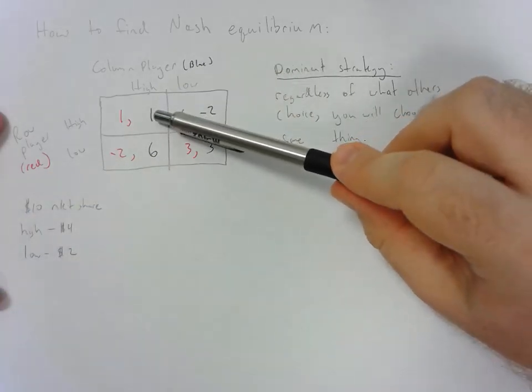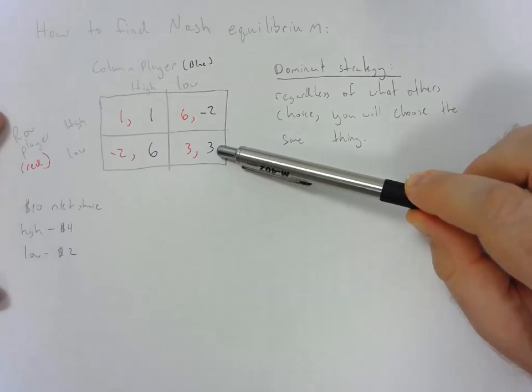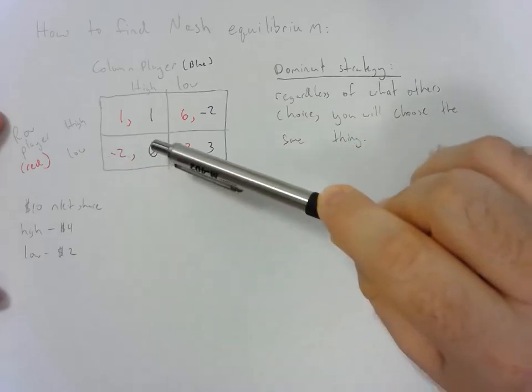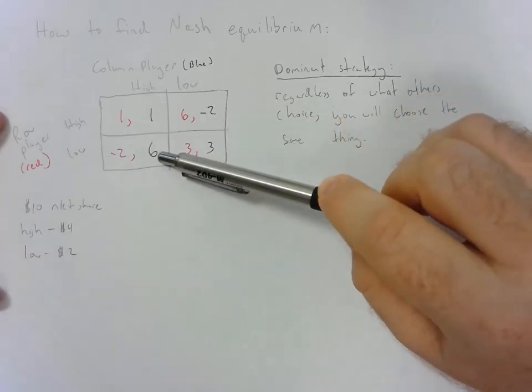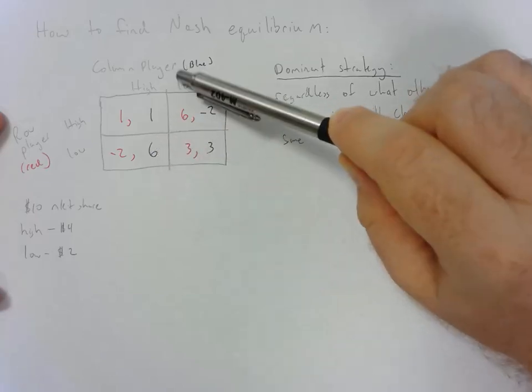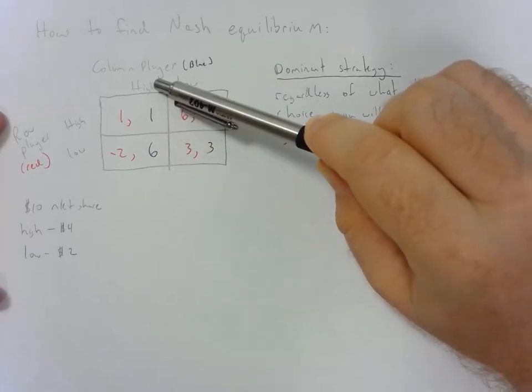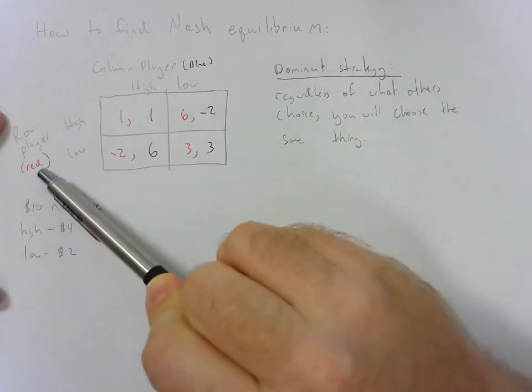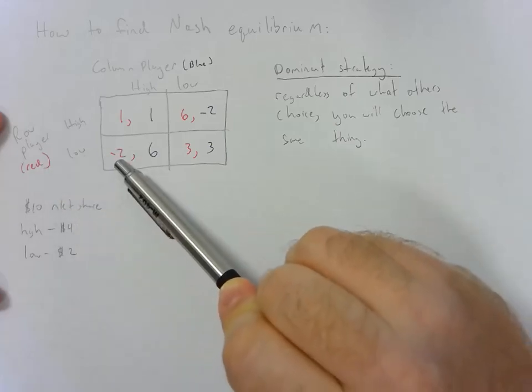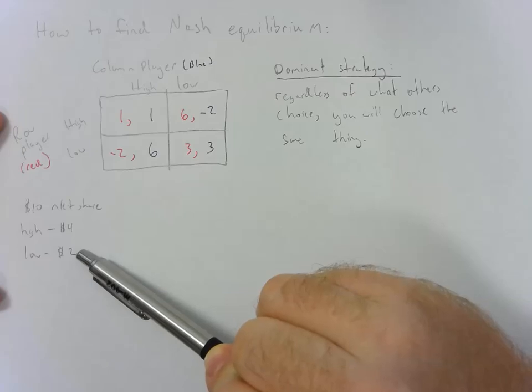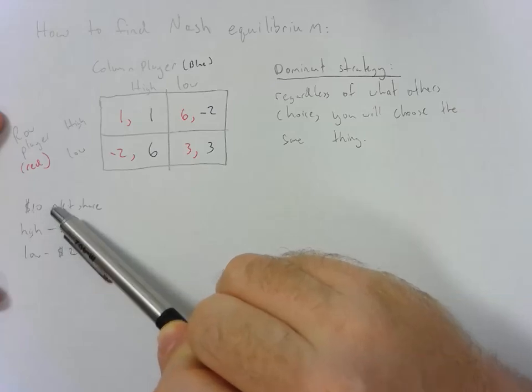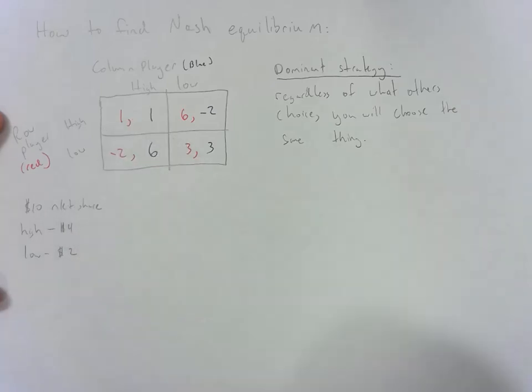And I assume that if they choose the same advertising amount that they split the market share. However, if one of them does the high amount and the other does the low amount, then the high advertiser wins the total market share. So you can see column player blue, if they advertise high, they get $10 minus $4 for a payout of $6. Our row player red gets a market share of $0, but they still have to pay $2 in advertising, so they get a negative 2. If they both do high, they split the market share 5-5, they each pay $4, resulting in 1-1. So if you're curious where those values came from, that's why.